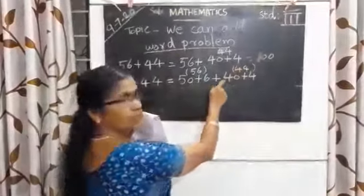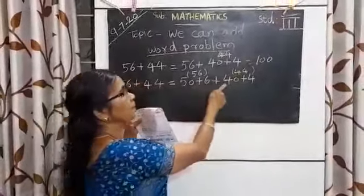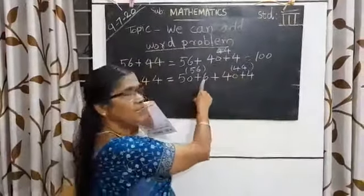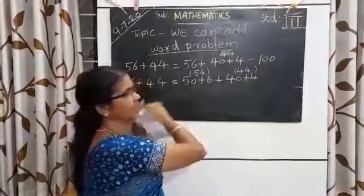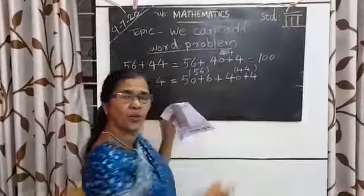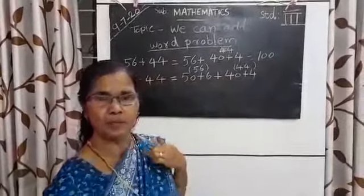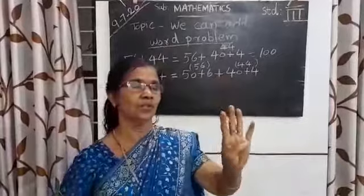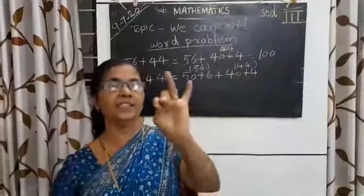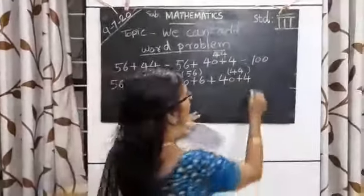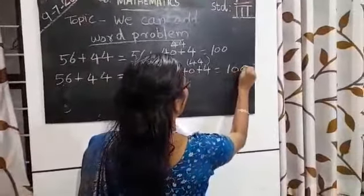50 plus 40 equals 90. 90 plus 6 equals 96. 96 plus 4: keep 96 in mind, take 4 fingers—97, 98, 99, 100. We got the answer as 100.